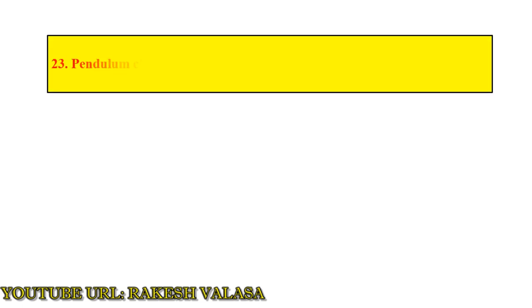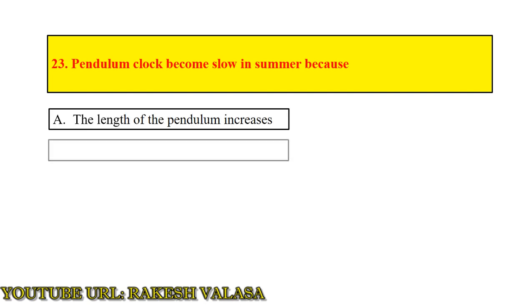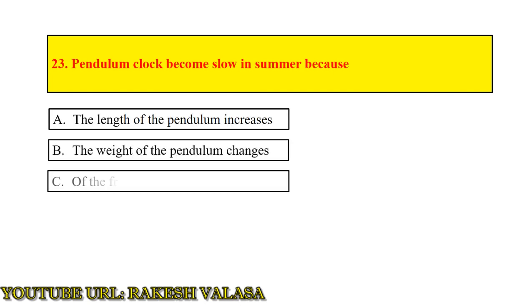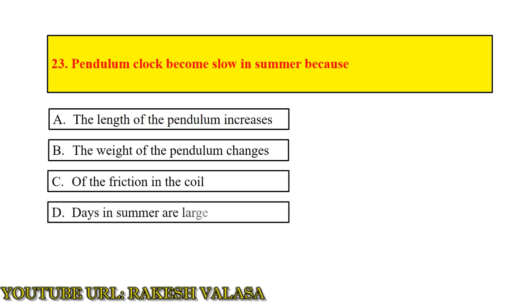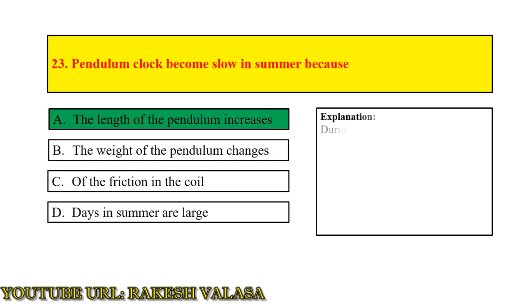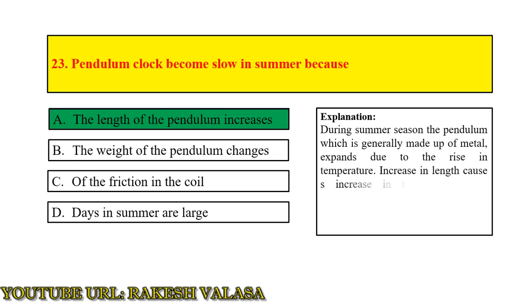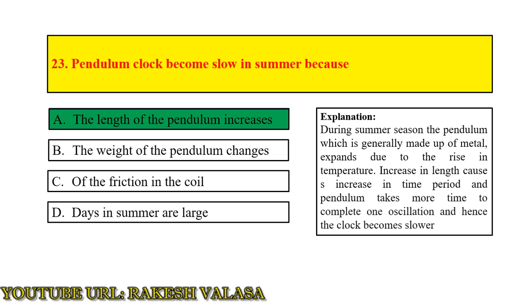Question number 23: Pendulum clock becomes slow in summer because — Answer: The length of the pendulum increases. Explanation: During summer, the pendulum, which is generally made up of metal, expands due to the rise in temperature. The increase in length causes an increase in time period, and the pendulum takes more time to complete one oscillation.